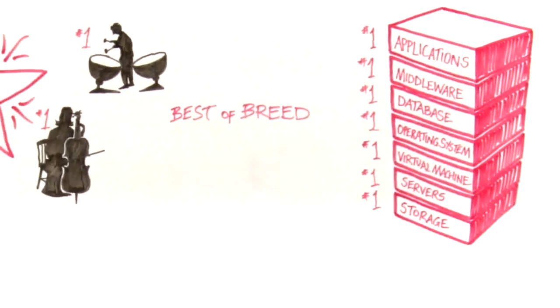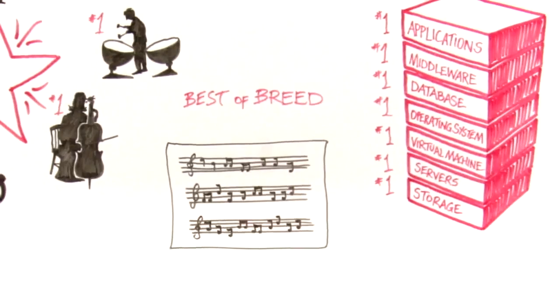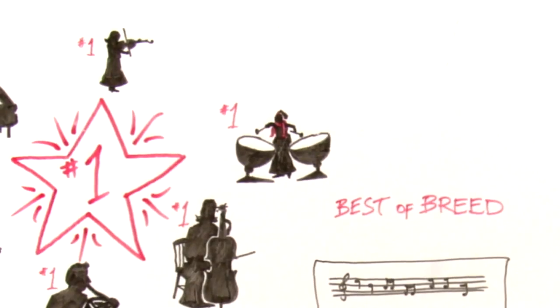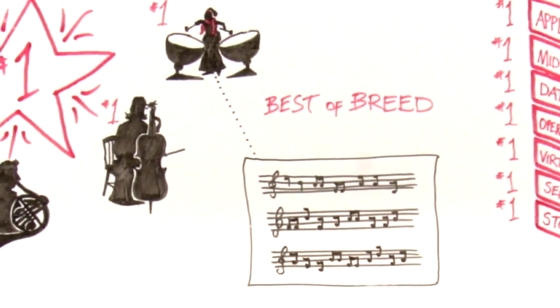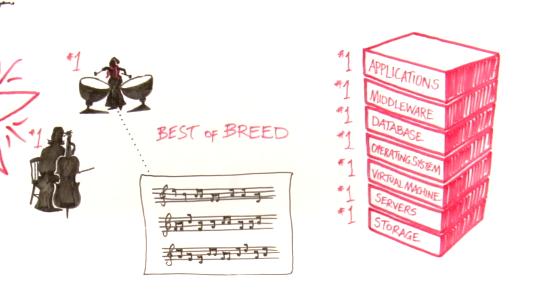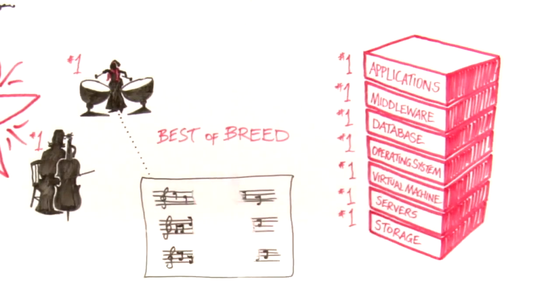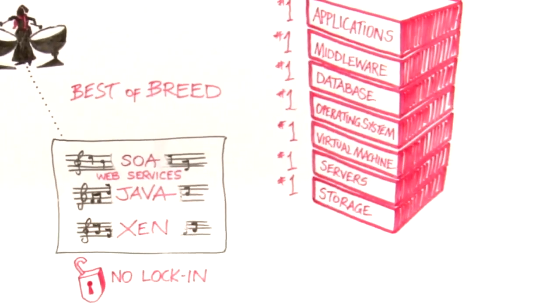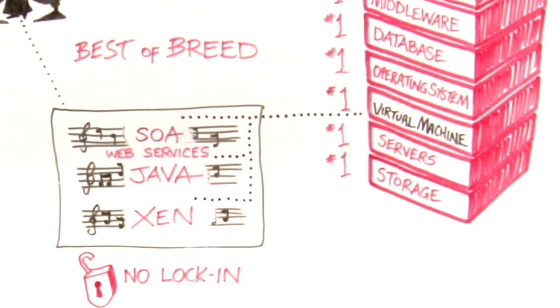Music is a global language. Sheet music is written in the same notation the world over. This means that if our orchestra decided to invite a guest musician from the Royal Philharmonic Orchestra in London, they could do that. The guest musician will be able to read the sheet music and join in without too much effort. The same is true of the Oracle stack. The layers are decoupled and it's been built using open standards such as SOA Web Services, Java and Xen, so there's no lock-in. If you do choose to swap out part of the stack and replace it with an alternative from another vendor, you can do that.